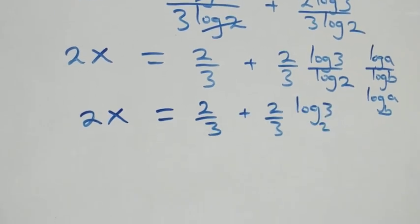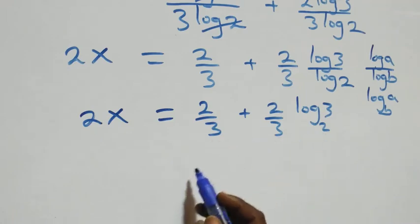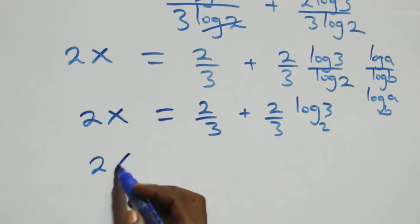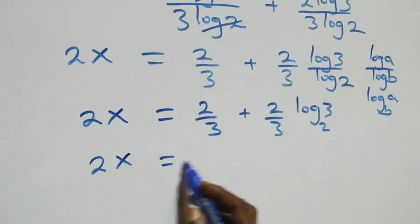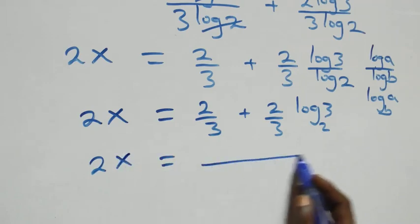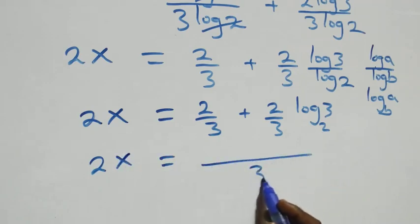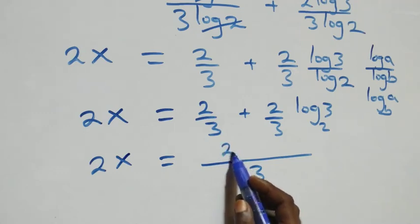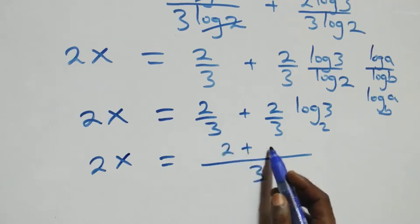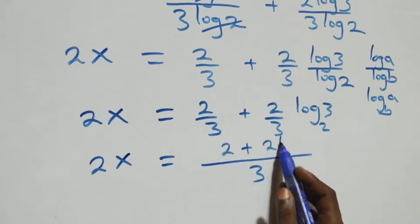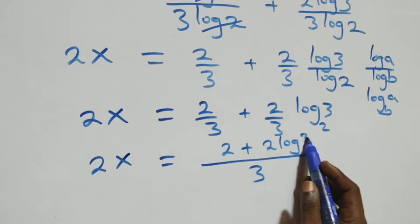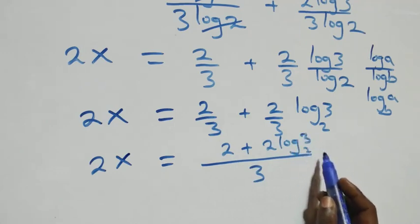We can factor and bring these terms together over a common denominator of 3. So we have 2x equals 2 plus 2 log 3 base 2, all over 3.